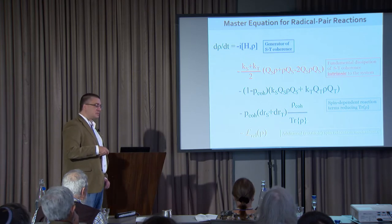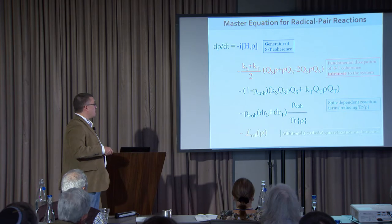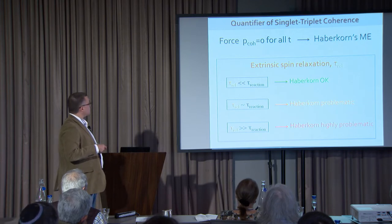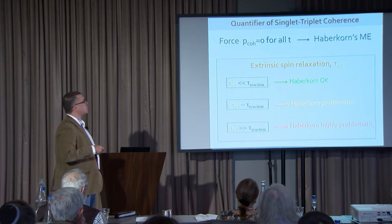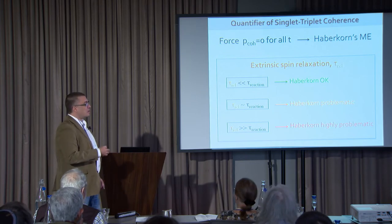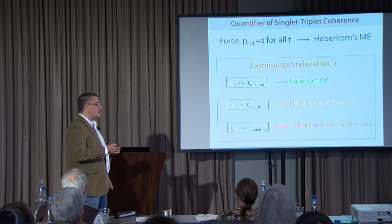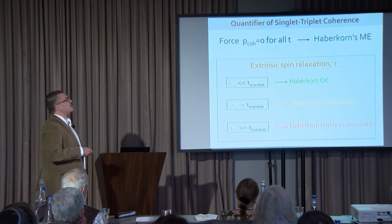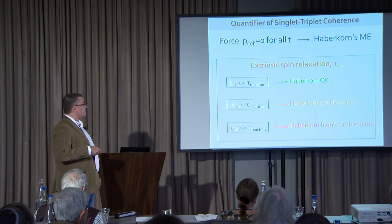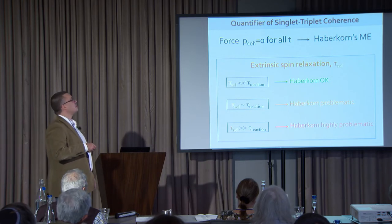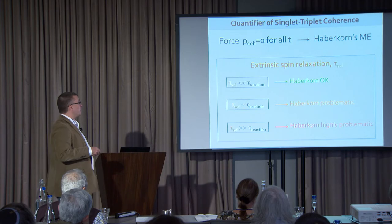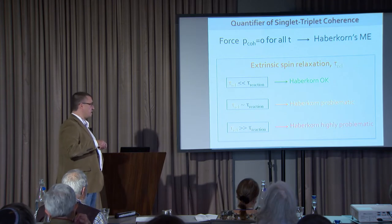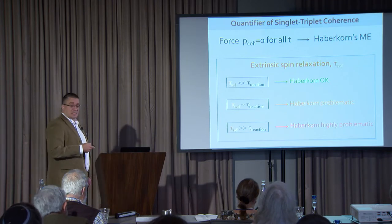The master equation also has terms accounting for population loss in the two channels, and if there are additional relaxation mechanisms — which in almost all cases there are — another term accounts for those. Interestingly, if we force our coherence quantifier to be zero for all times, we retrieve Haberkorn's master equation, meaning the old theory accounts for basically incoherent dynamics. However, the old theory is okay if there is additional spin relaxation with a time constant much smaller than the reaction time. In the other extreme — when additional spin relaxation has a time constant longer than the reaction time — the old theory is highly problematic.